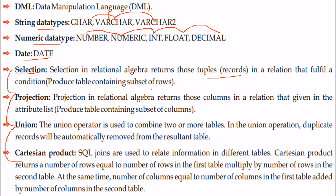String data types in DBMS include char, varchar, and varchar2. Numeric data types include number, numeric, int, float, and decimal. There is also a date data type. In relational algebra, there are four operations: selection (gives records/tuples), projection (gives columns), union (combines tables), and Cartesian product (multiplies rows and adds columns of two tables). This concludes Chapter 1. Thank you.